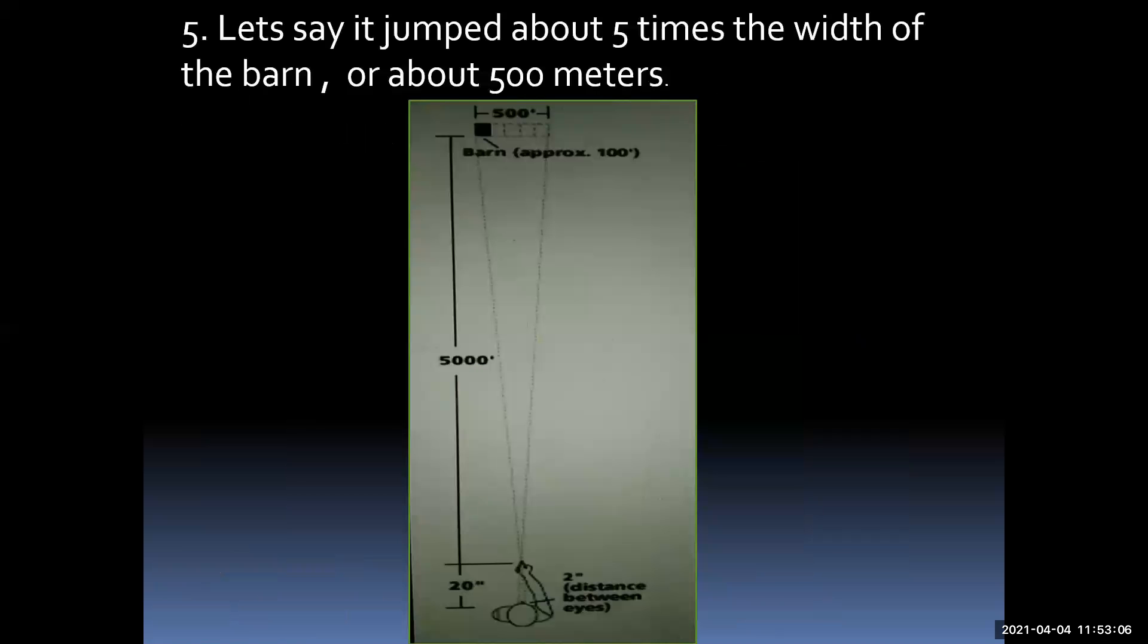Let's say it jumped about five times the width of the barn, or about 500 meters, as shown in the figure. So with the thumb calculation, we got five, which was 500 meters. We've now estimated the distance.